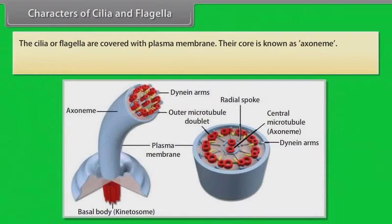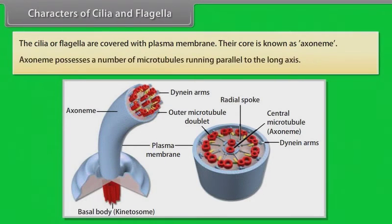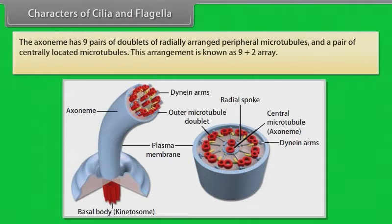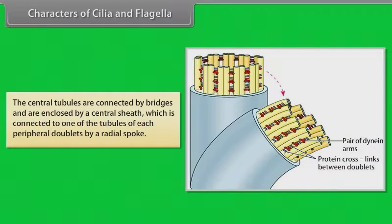Cilia and flagella are covered with plasma membrane. Their core is known as the axoneme. The axoneme possesses a number of microtubules running parallel to the long axis. It has nine pairs of doublets of radially arranged peripheral microtubules and a pair of centrally located microtubules — an arrangement known as the 9+2 array. The central tubules are connected by bridges and enclosed by a central sheath, which is connected to one of the tubules of each peripheral doublet by a radial spoke.